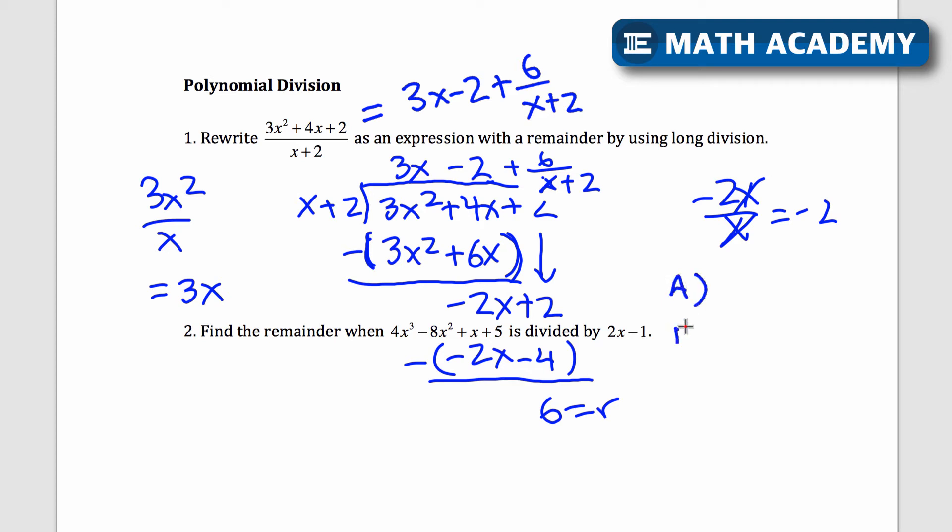They might give you choices A, B, C, D, and let's say that this is one of the options here. Let's say choice C is 3x minus 2 plus 6 over x plus 2. One strategy to solve for this is to use this polynomial division process. Another strategy is to say, hey, if I plug in some number for x here, it'll be the same as if I plug in a number for an equivalent expression.